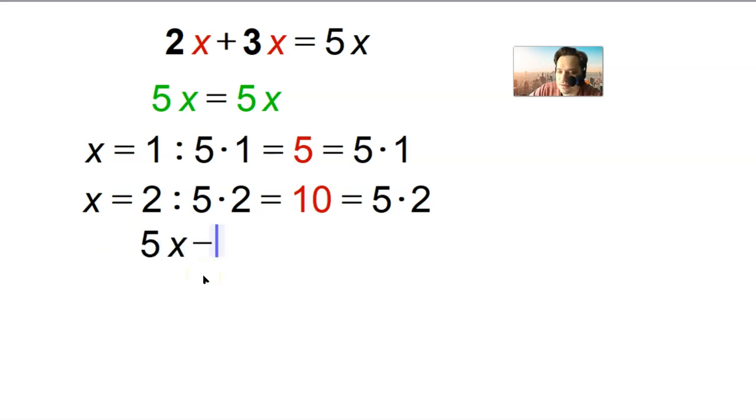Now you could take an additional step. You could say 5x minus 5x equals 5x minus 5x, subtracting 5x from both sides. When I do that, I'm going to have 5x minus 5x which is 0. On the right side 5x minus 5x is also equal to 0. So when you see something like 0 equals 0, then you know it's an identity also.